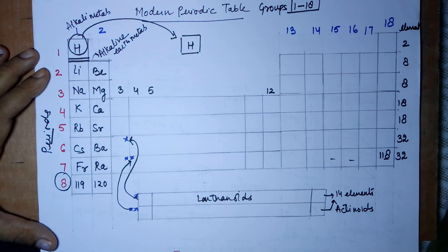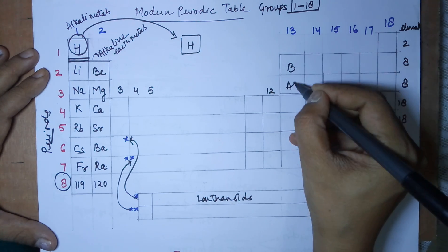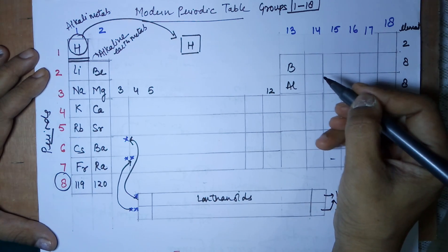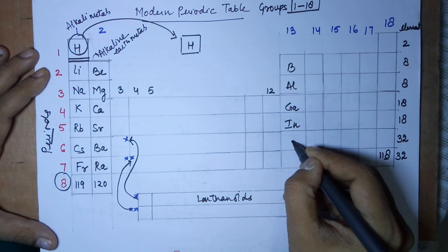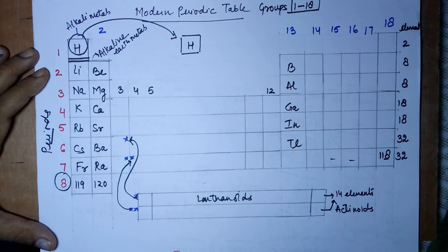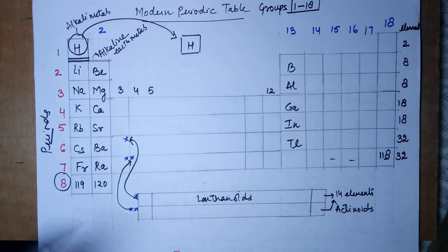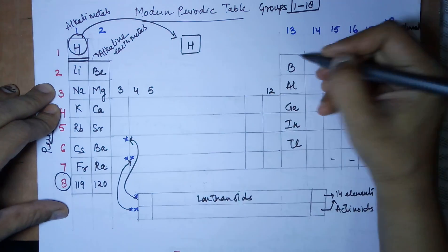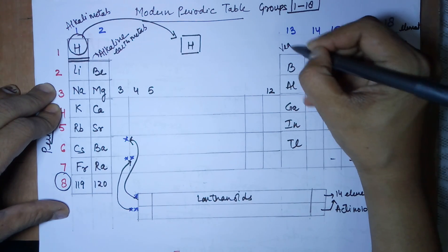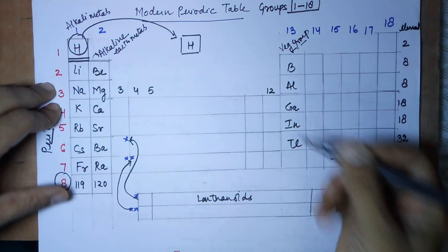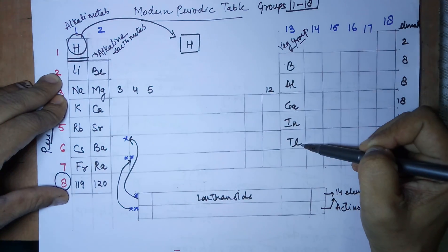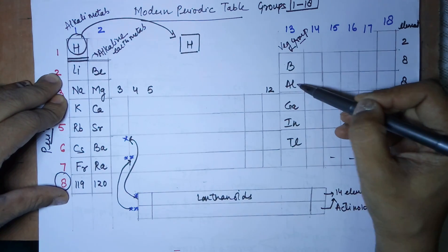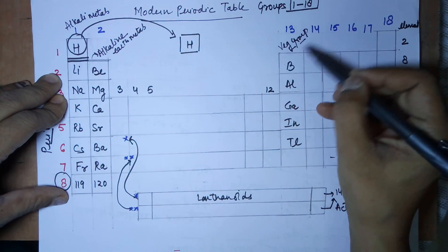Moving on to group number 13 — the members are boron, aluminium, gallium, indium, and thallium. This group is also called the boron family. The easy mnemonic to learn it — I call it the vegetable group — is: 'Baingan aloo gajar in thalla.' That's your group number 13.